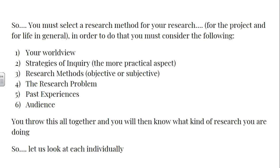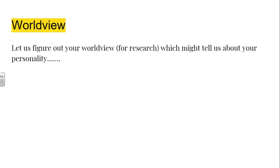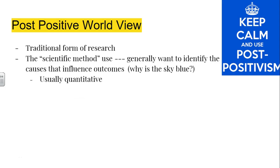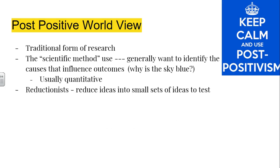Putting this all together will tell you what kind of researcher you are and how you go about doing your research. The first worldview we're going to talk about is the post-positive worldview. This is the traditional form of research — it uses the scientific method where you genuinely want to identify causes that influence the outcome. For example, why is the sky blue? It's usually quantitative, with actual data and experiments that you can measure and prove.